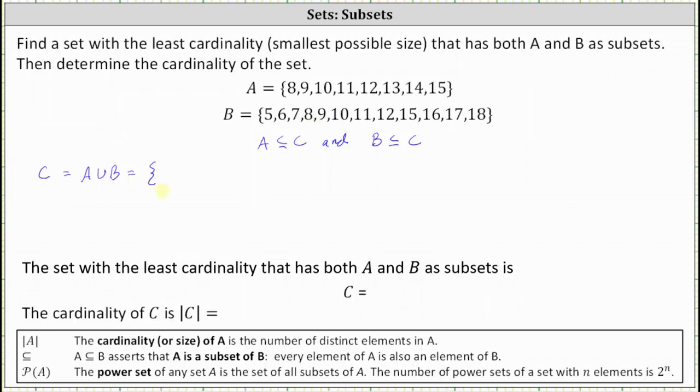A union B is the set containing the elements 5, 6, 7, 8, 9, 10, 11, 12, 13, 14, 15, 16, 17, 18.